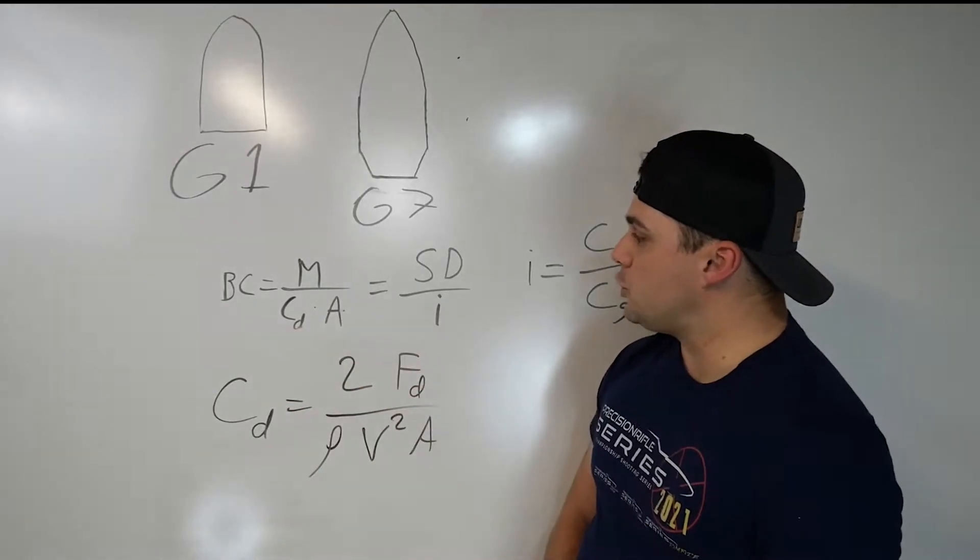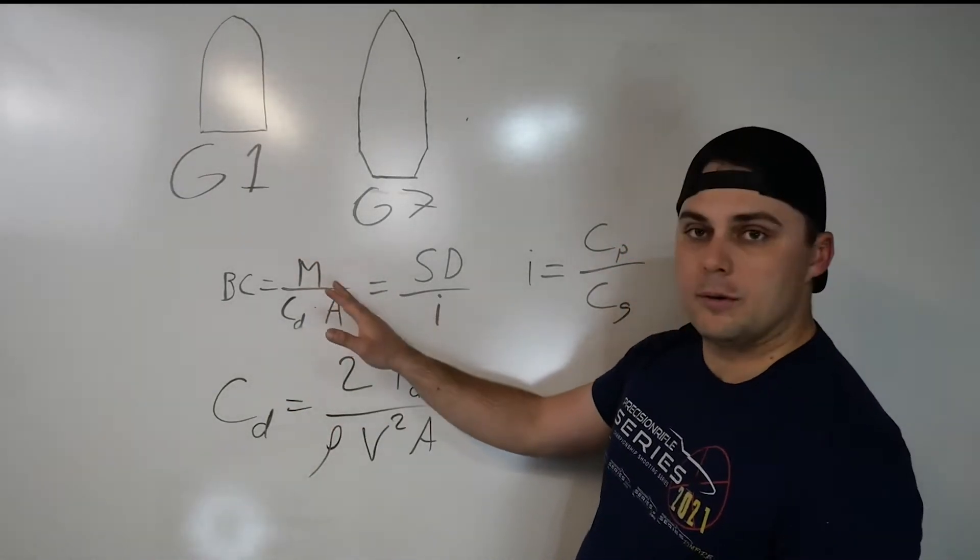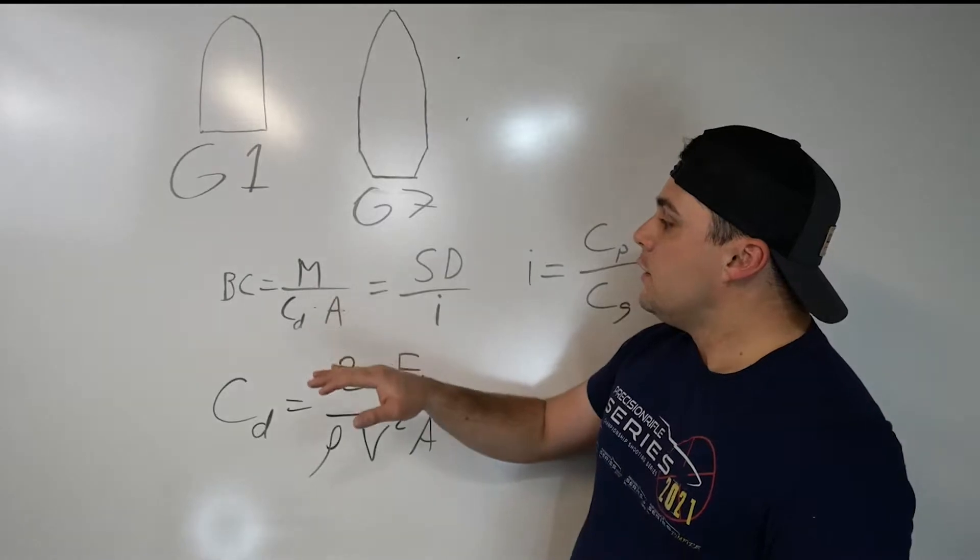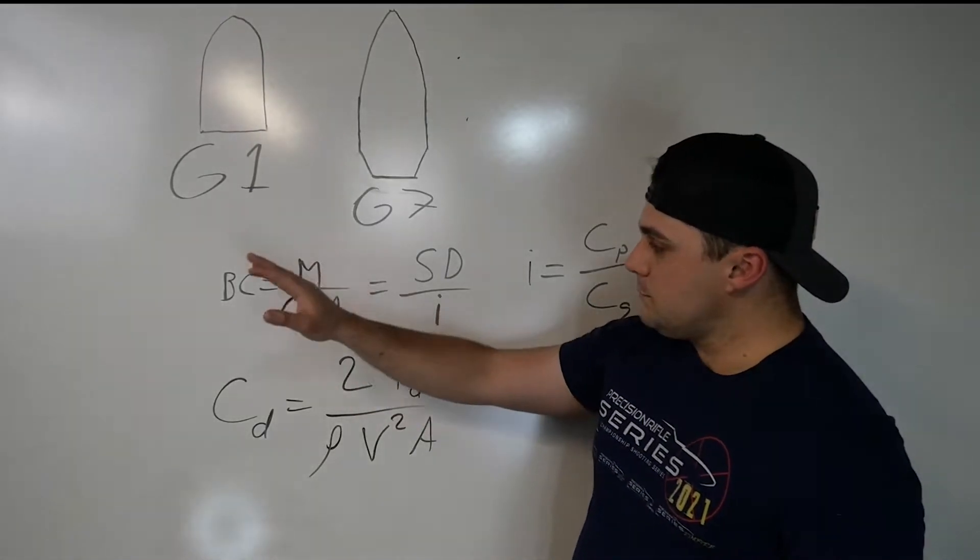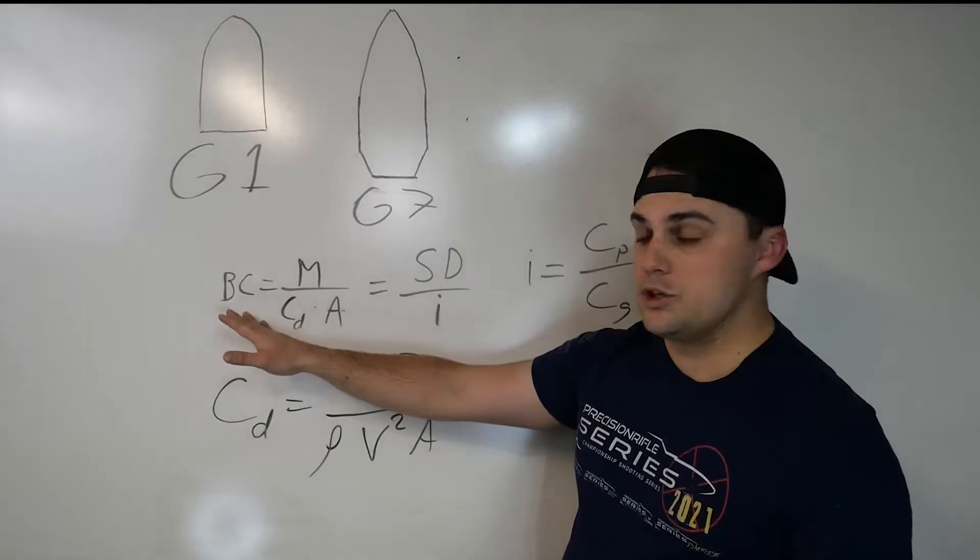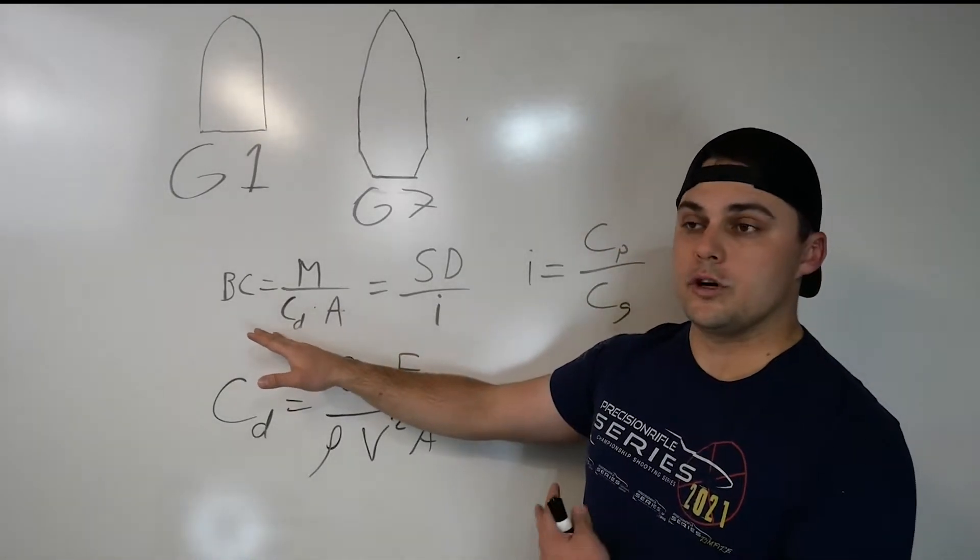So all things being equal in a bullet, if you're shooting a bullet of the same weight and the same caliber, so the mass and the area are the same, you're going to end up with a differentiating ballistic coefficient to help you choose your projectile because the drag coefficients for those are going to be different.